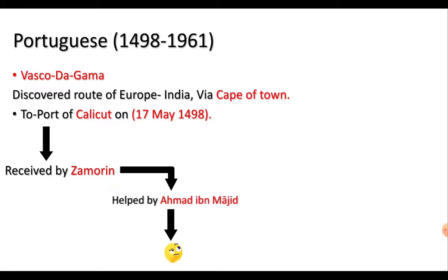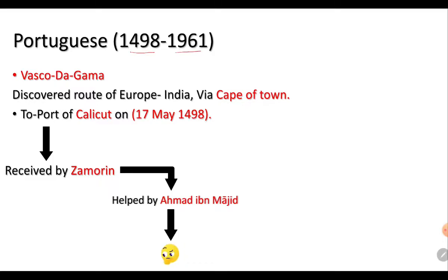From this time the East India Company comes to the East. The Portuguese time period spans from 1498 to 1961. First of all, the person who came to India was Vasco da Gama.